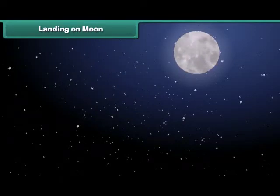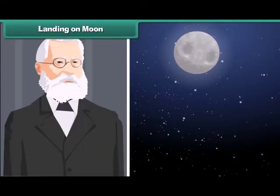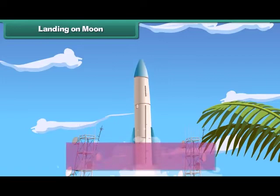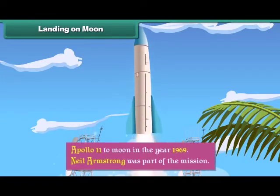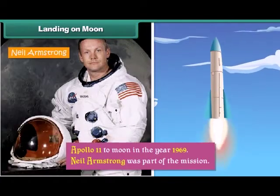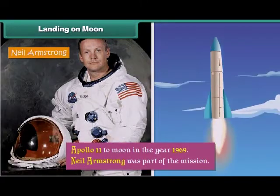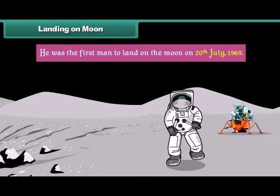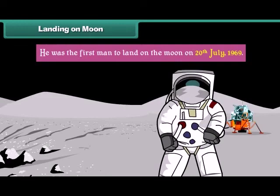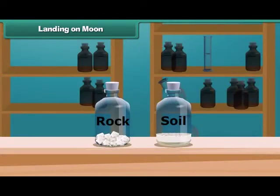Even though life is impossible on the Moon, it continues to fascinate scientists. They wanted to learn more about it, and therefore they sent a mission called Apollo 11 to the Moon in the year 1969. Neil Armstrong was part of the mission. He was the first man to land on the Moon on 20th July 1969. He performed various experiments on the Moon and brought back samples of soil and rock.